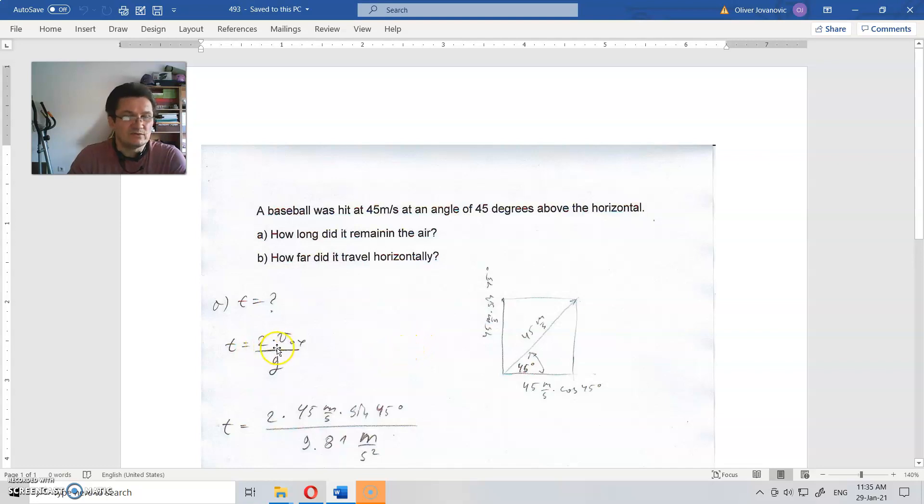So time of flight is two times v_0y, and v_0y is initial speed upwards. From the picture, as you can see, this is 45 degrees, this is 45 meters per second. So distance from here to here is, or from here to here, the same thing: this thing times sine of 45.